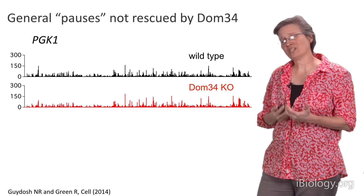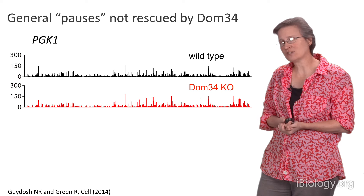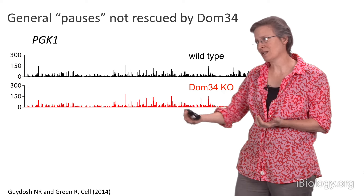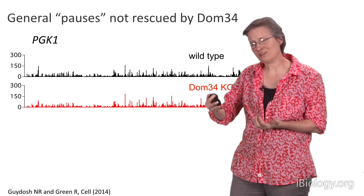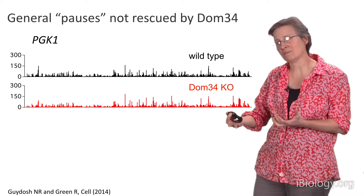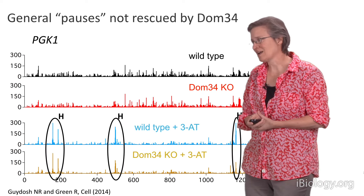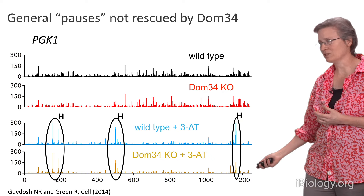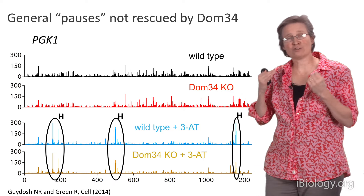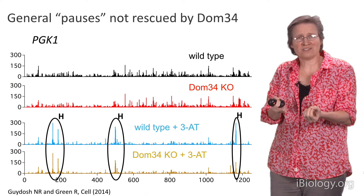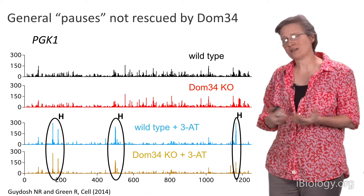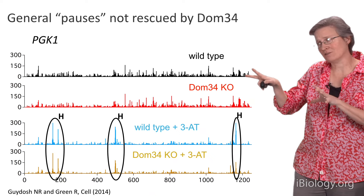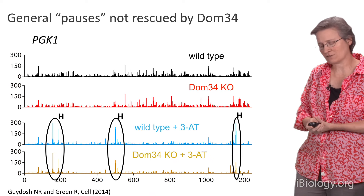We worried whether we had the tools to observe significant pausing, so we added 3-aminotriazole — a histidine analog that blocks histidine biosynthesis — to yeast, anticipating ribosomes would pile up at histidine codons. Indeed, in both wild-type and DOM34 knockout strains, we saw piles of ribosomes exactly at histidine codons throughout the genome, confirming we could detect pausing. DOM34 does not respond to general amino acid starvation as expected, but this gave us confidence in the methodology.